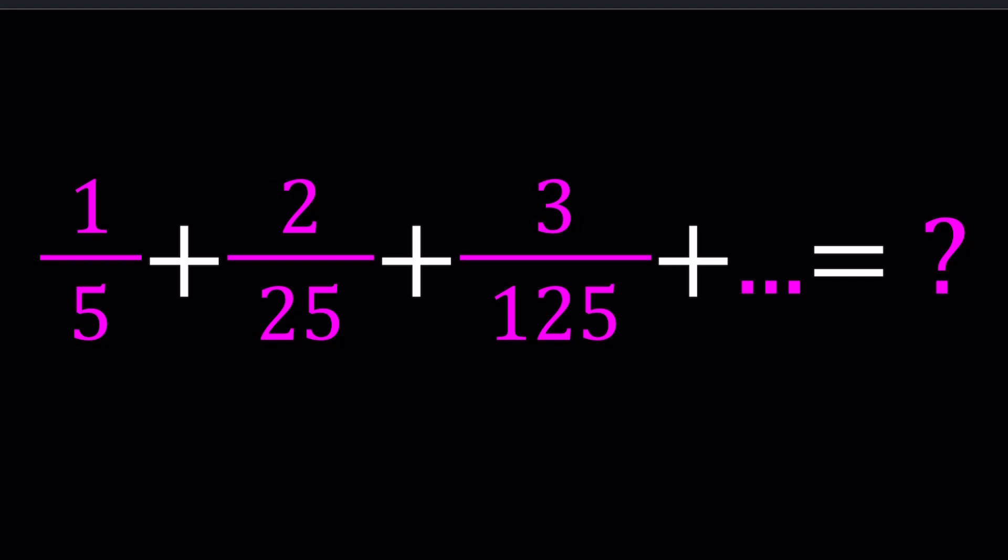We have 1 over 5, plus 2 over 25, plus 3 over 125, plus 4 over 625, so on and so forth.